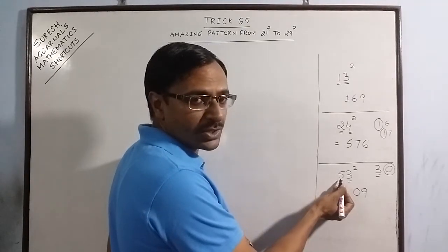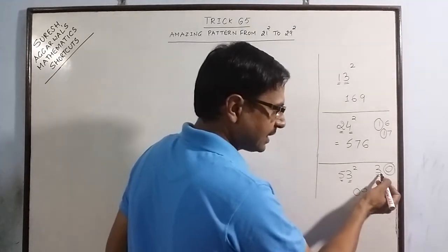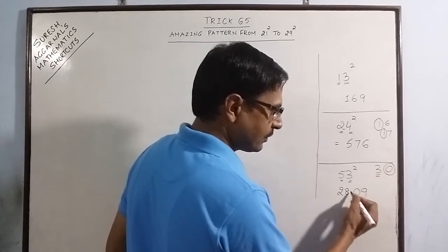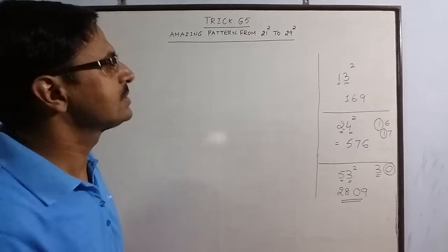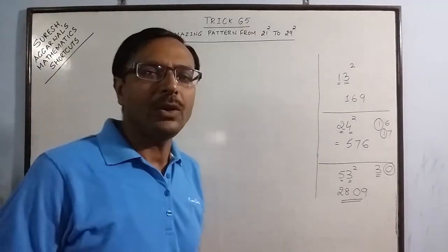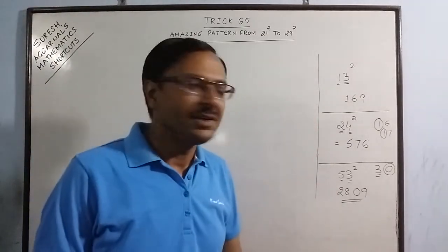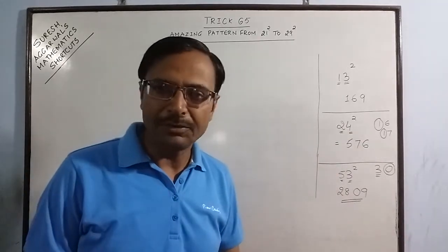5. Now 5 square is 25 plus 3 carry 28. So we have 2809 as the square of 53. Likewise you can carry on and enjoy this method and square all numbers from 11 to 99.